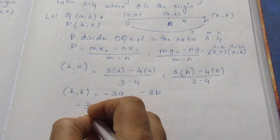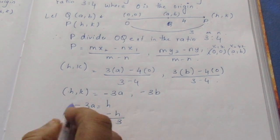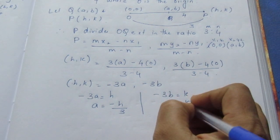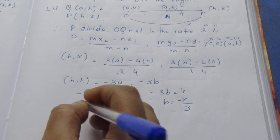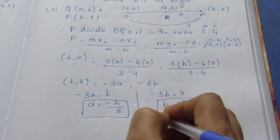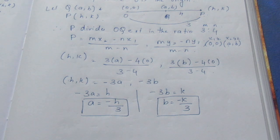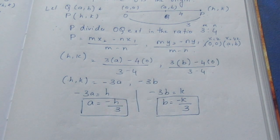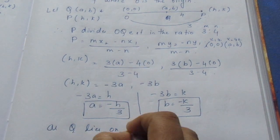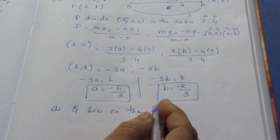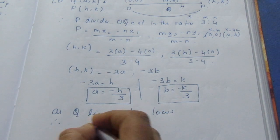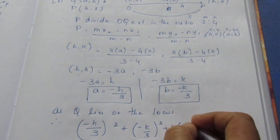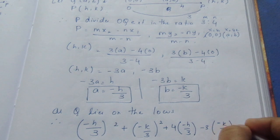We have a is equal to minus h by 3, and b is equal to minus k by 3. Now, since Q lies on the locus, we will substitute these values into the locus equation: (minus h by 3) whole square plus (minus k by 3) whole square plus 4 into (minus h by 3) minus 3 into (minus k by 3) plus 7 equal to 0.